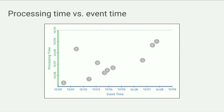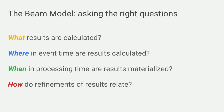Event time is the time the event actually happened — when the user did something that generated the event. Processing time is the time the system had a chance to process that event, often very close to event time, but sometimes reasonably delayed. The diagonal line shows event time being equal to processing time. In the ideal world, all events would lie on this diagonal line, but in reality some events are delayed more than others — for example, event number three is delayed just a little bit, and event number nine was delayed quite a bit.